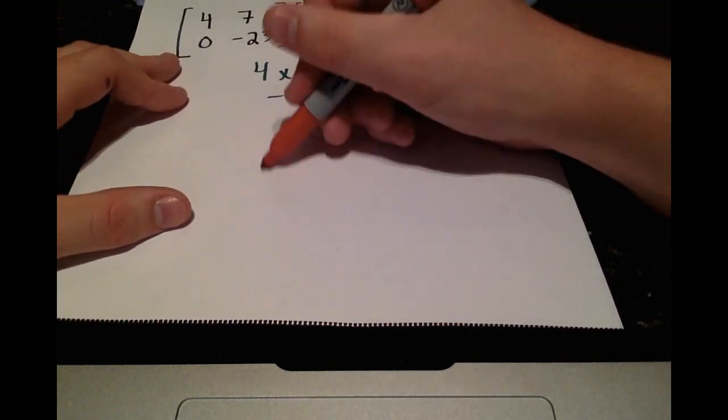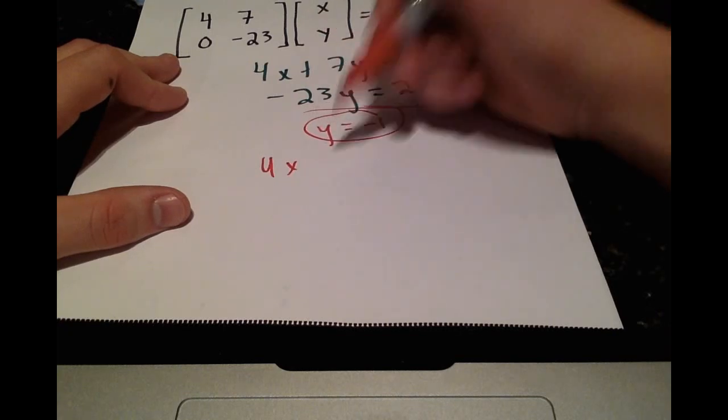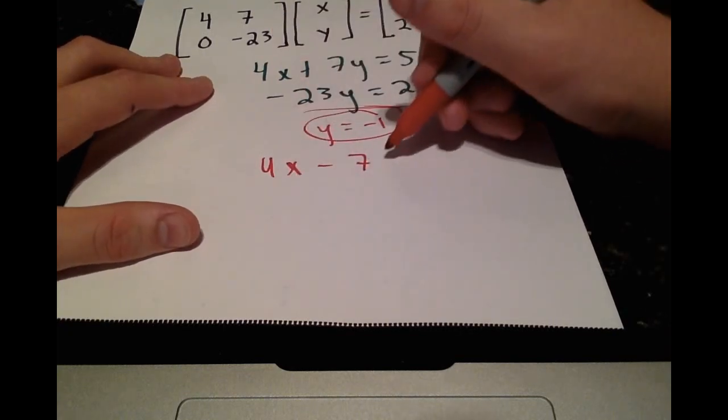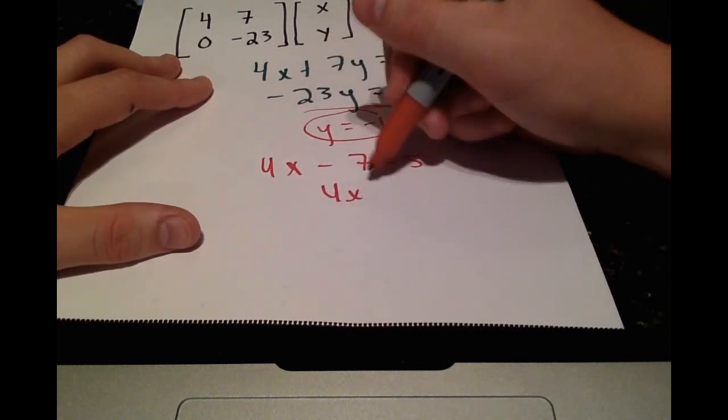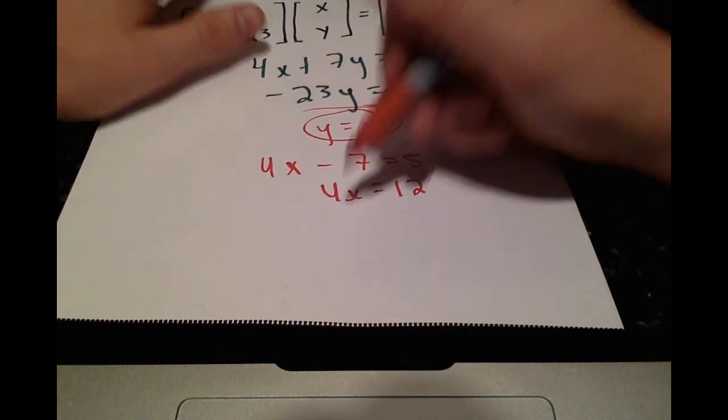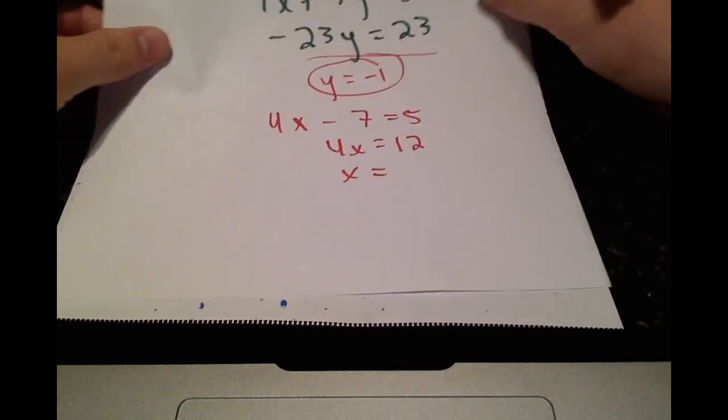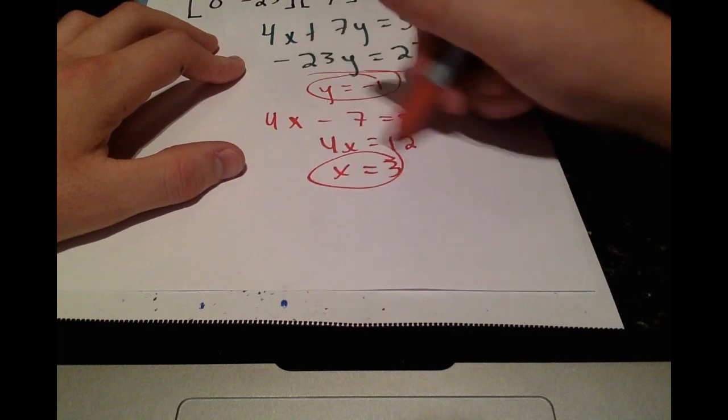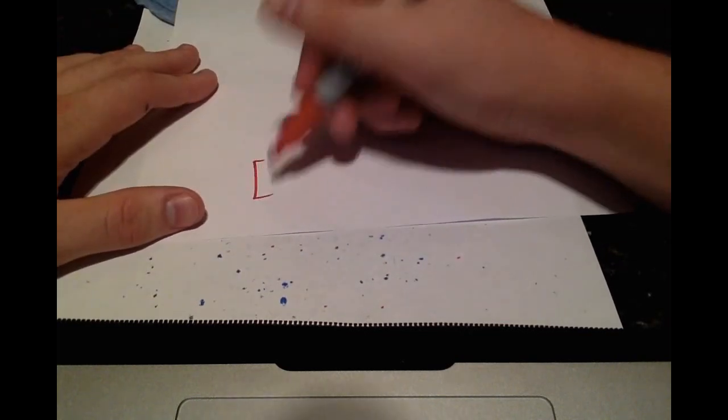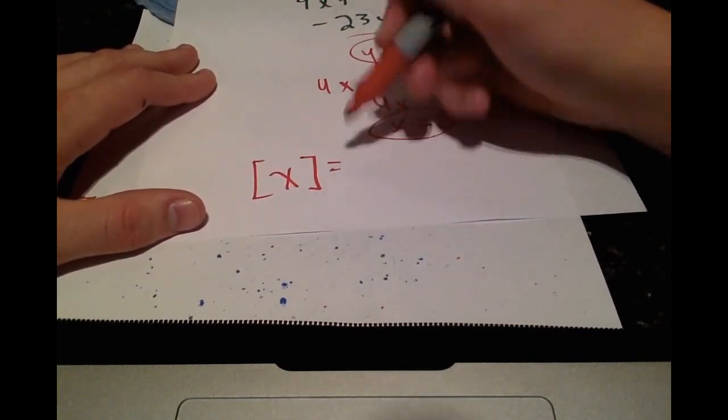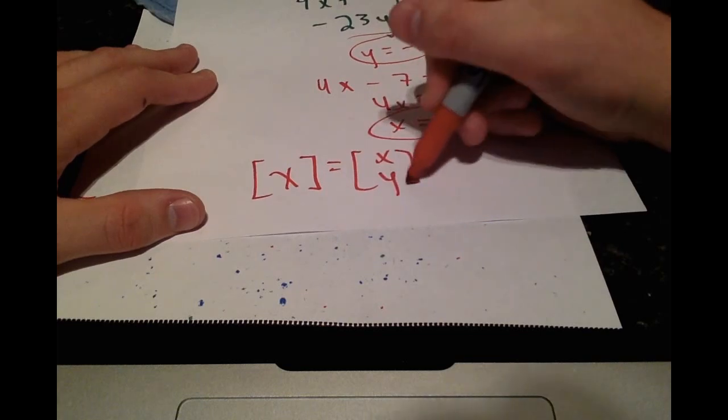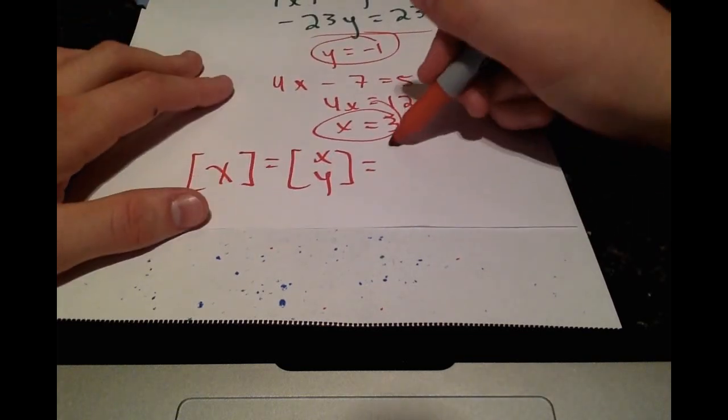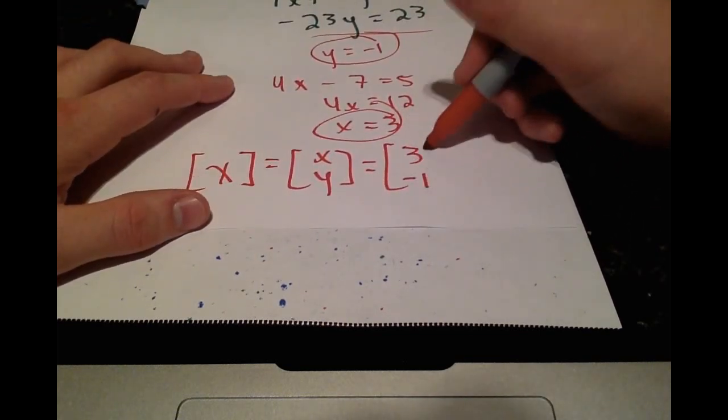Plugging that in you get 4X minus 7 is equal to 5. 4X is equal to 12. X is just equal to 3 and we have our solution vector X which is equal to the values we got for X and Y which we got as 3 and negative 1.